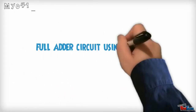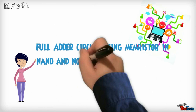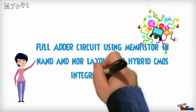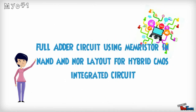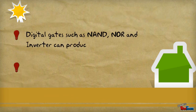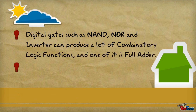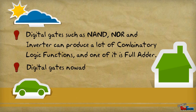Presenting the full Adder circuit using memristor in NAND and NOR layout for hybrid CMOS integrated circuit. Digital gates such as NAND, NOR, and inverter can produce a lot of combinatory logic functions, and one of them is the full Adder.